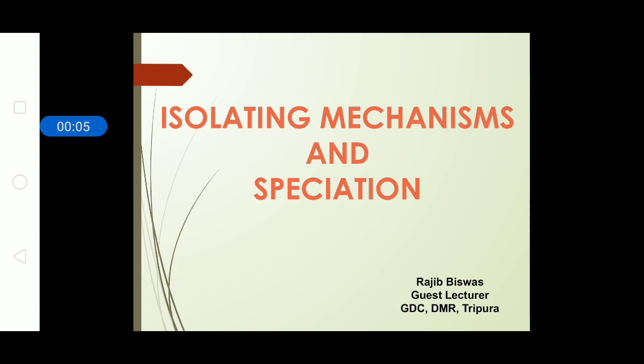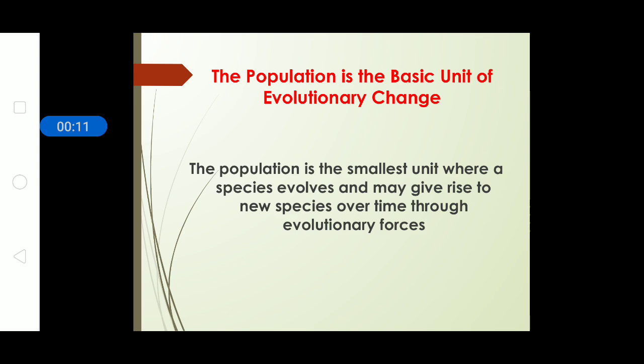Hello everyone. In this class we are going to discuss isolating mechanisms and speciation. Population is the basic unit of evolutionary change — it is nothing but the smallest unit where a species evolves and can give rise to a new species over a period of time through evolutionary changes.